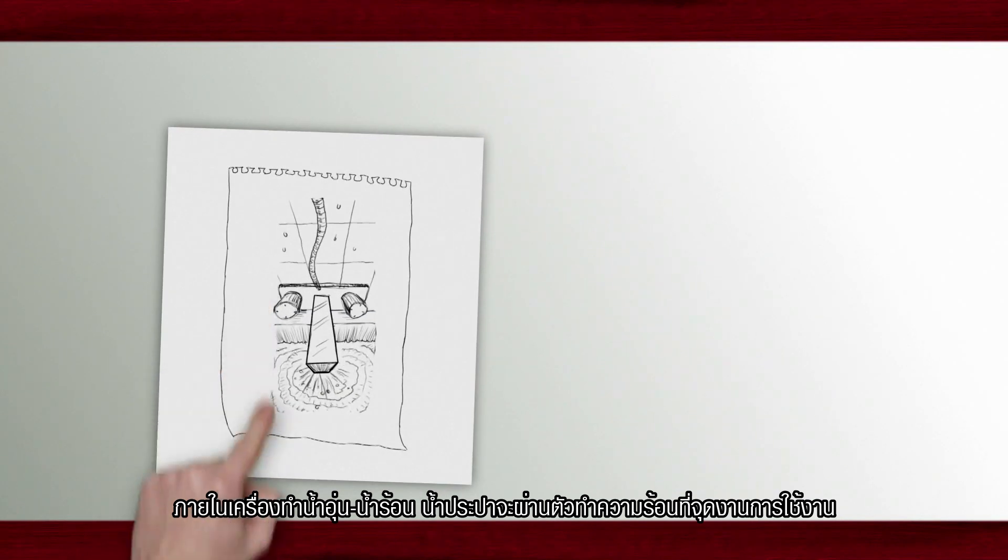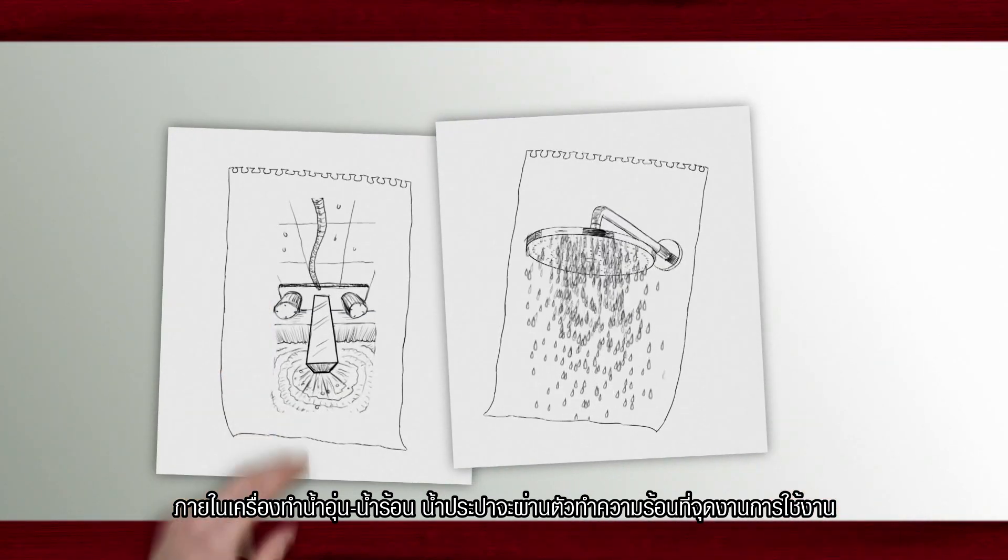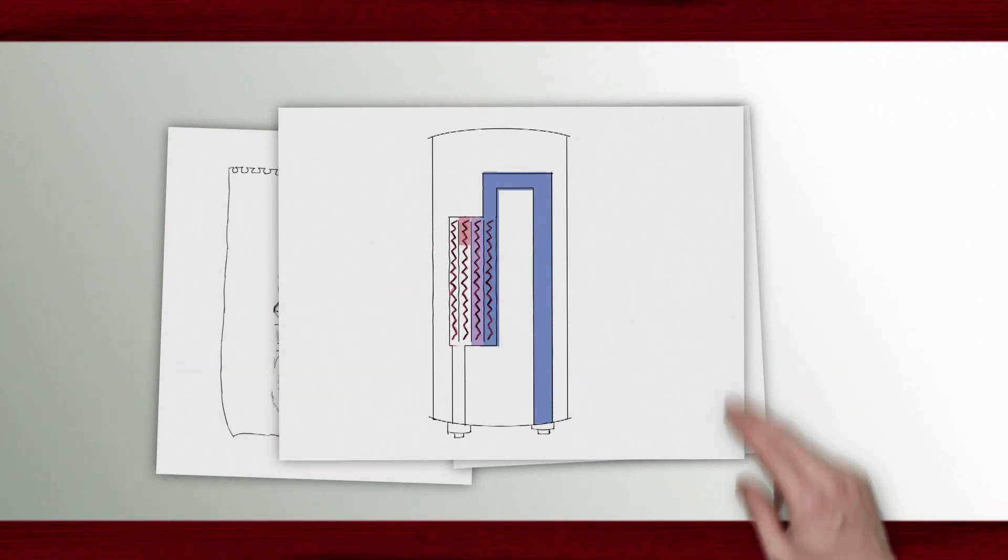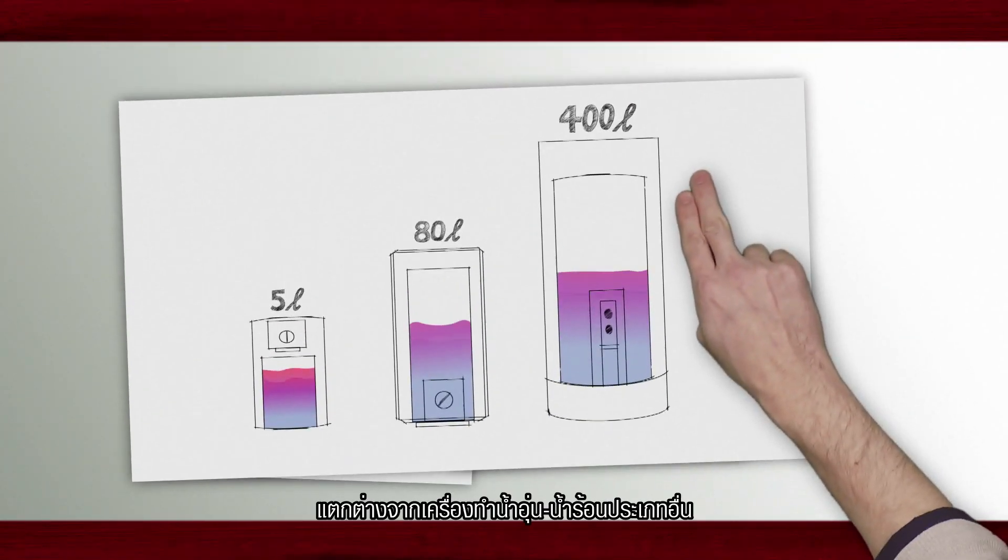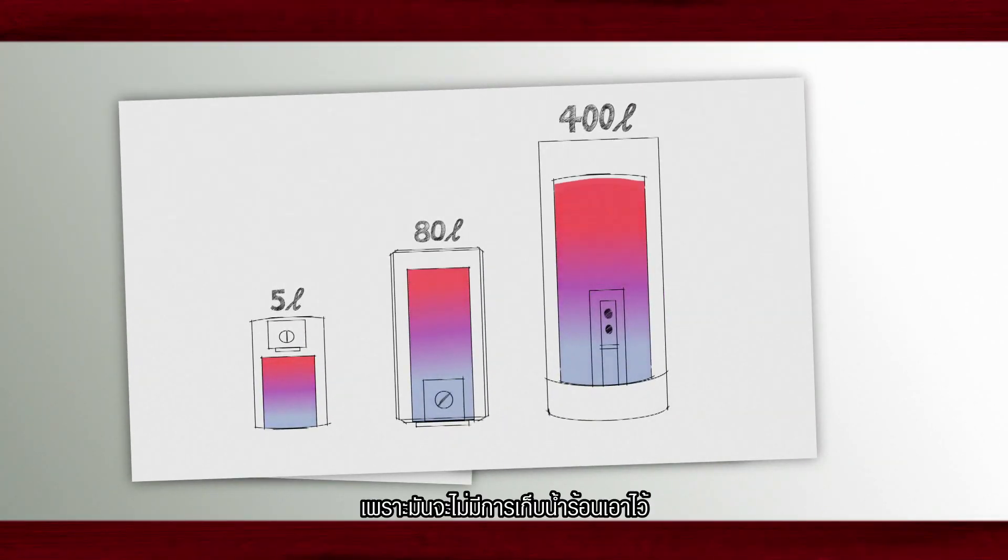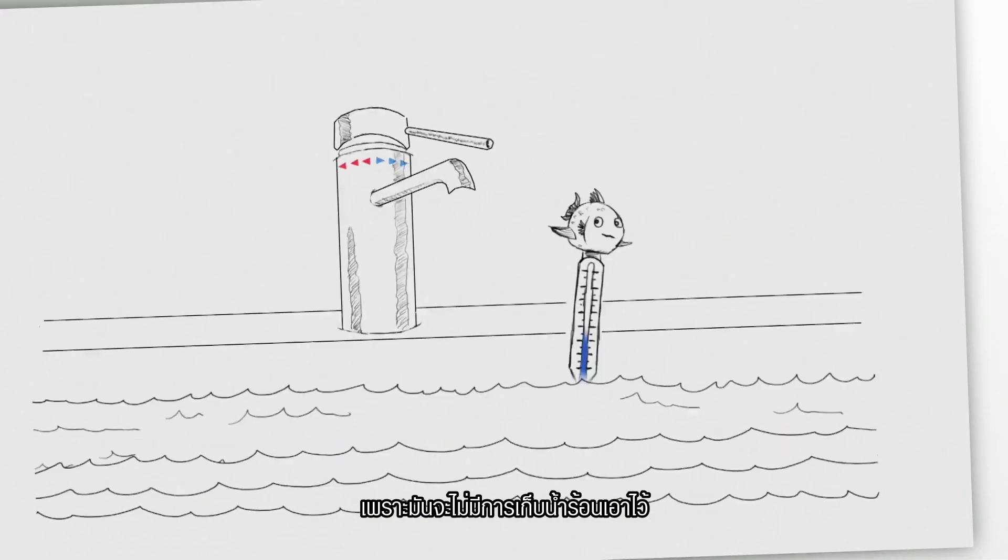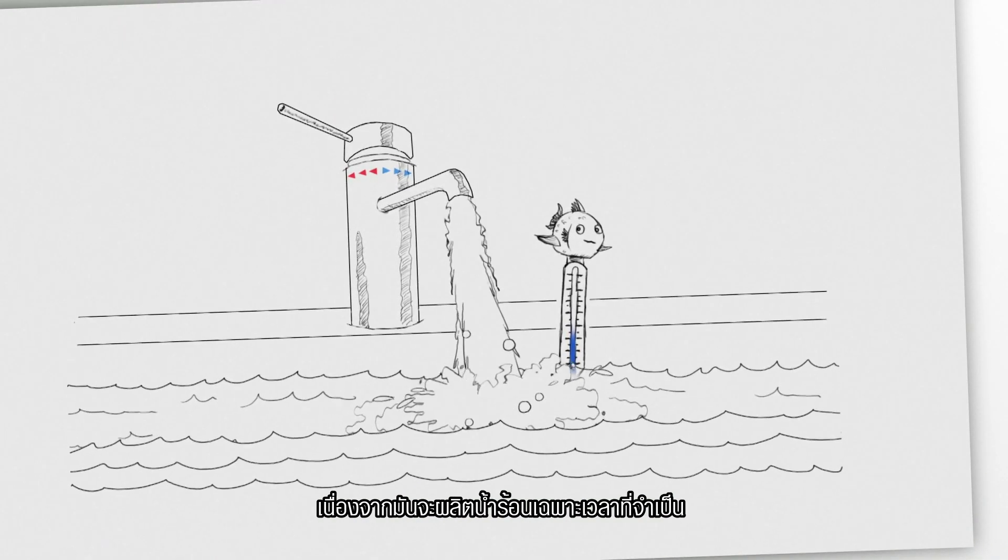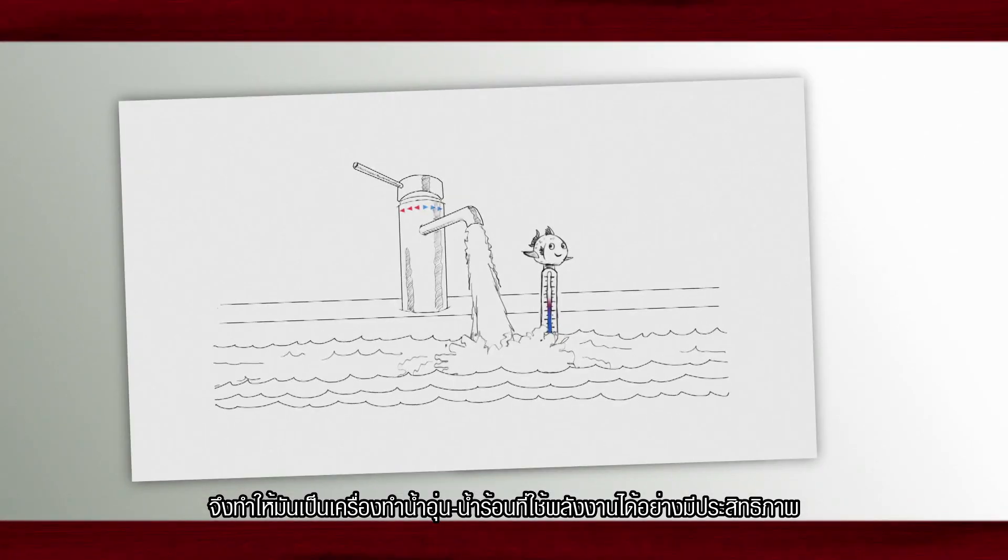In an instantaneous water heater the water passes directly through the heating element at the point of use. In contrast to other types of water heater, instantaneous water heaters offer the comfort of instant hot water without storing it. They only produce it when necessary and that is what makes them so energy efficient.